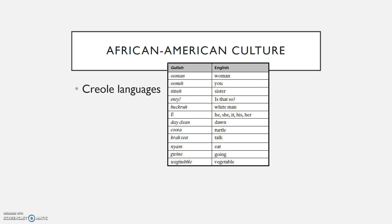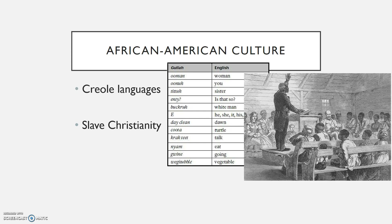Besides languages, slaves also adopted religion. Many slaves were forced or at least encouraged to adopt Christianity, but slave Christianity evolved to be quite different from traditional Christianity. It incorporated African cultural traditions such as drumming, dancing, and sometimes even sacrificing animals. Slave Christianity also put a much higher emphasis on the supernatural, due to African traditions of spirit worship.